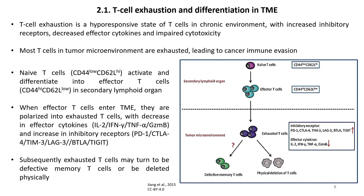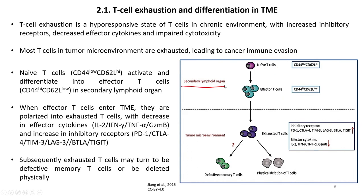T cell exhaustion and differentiation in the tumor microenvironment is an important phenomenon. T cell exhaustion is a hyporesponsive state of T cells in a chronic environment with increased inhibitory receptors, decreased effector cytokines, and impaired cytotoxicity. Most T cells in the tumor microenvironment are exhausted, leading to cancer immune evasion. Naive T cells activate and differentiate into effector T cells in secondary lymphoid organs; when effector T cells enter the TME, they are polarized into exhausted T cells with decreased effector cytokines and increased inhibitory receptors.